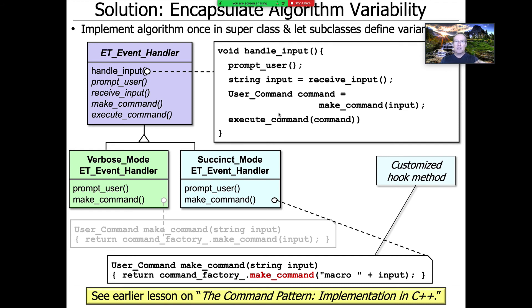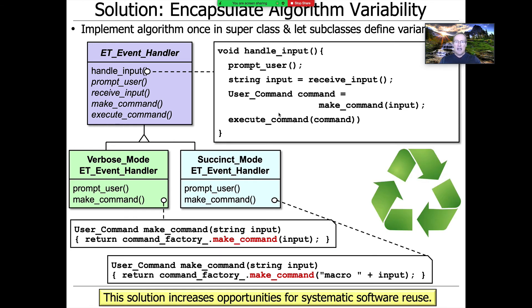That's how we selectively vary the behavior. Notice that nothing else changes. Handle input stays the same. It prompts the user, receives the input, makes the command, executes the command. But then we selectively modify bits and pieces of stuff that needs to change. So what's the key point? We end up with much better support for systematic reuse. Our code now has one algorithm, but we can customize it to support the different modes. We're completely living within the constraints of the don't repeat yourself principle, which is very important.